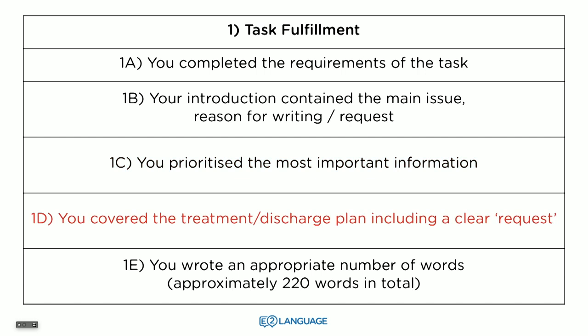Criterion 1D: you need to cover the treatment and discharge plan, including a clear request. Usually towards the end of the case notes, there's going to be a treatment plan or a discharge plan that will give you information you need to include — for example, when the patient needs to follow up with the doctor, checking of the medication, or when the home care nurse needs to attend the patient. What you need to do is synthesize and summarize this information and put it into a very clear request at the end of the letter. You can't forget any of that important information from the treatment or discharge plan.